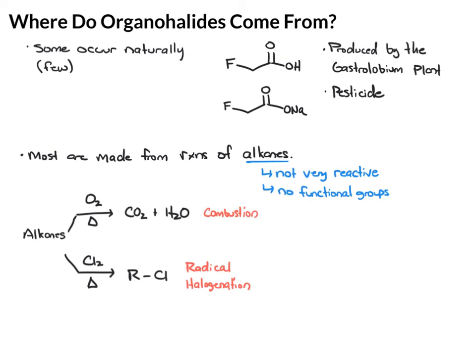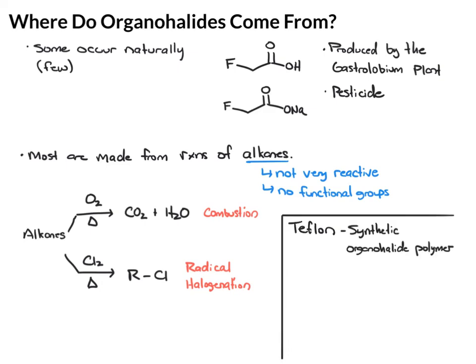Of other interest, another common alkyl halide you probably hear a lot about is Teflon. Teflon is a common nonstick coating and it's a synthetic organohalide that is a polymer — a polymer being many repeating units. For Teflon, it's repeating CF2 units: CF2 bonded to another, bonded to another, and so forth with hundreds or thousands of CF2 groups connected together. We can represent this polymer by drawing squiggly lines to indicate it repeats over and over again.